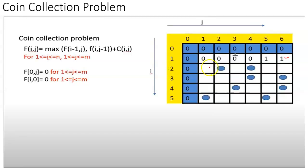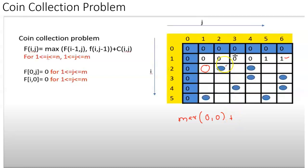Next we need to calculate the remaining cells in the same way by applying the recurrence relation. For this cell, the cost is the maximum of the upper cell or the left cell, plus the cost of this cell. The cost of this cell is zero, so upper and left are both zero, giving zero. For the next cell, maximum of upper cell and left cell is zero, plus cost of current cell — since a coin is there, cost is one — so it equals one.